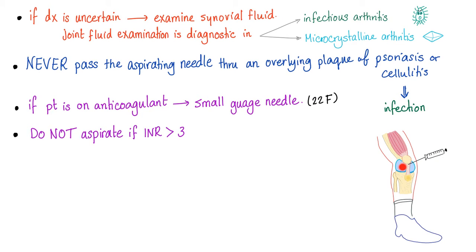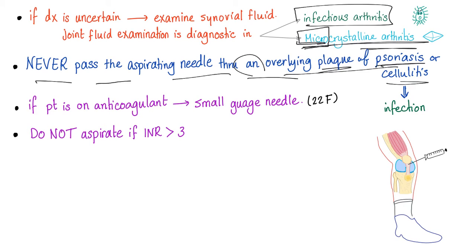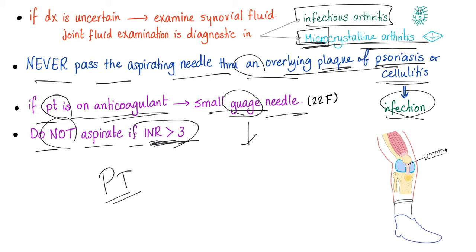If the diagnosis is uncertain, examine the synovial joint. Poke that joint and tap it. Get the fluid, send it to the lab. Joint fluid examination is diagnostic in cases of infectious arthritis and microcrystalline arthritis. We say microcrystalline, don't expect to see like a four-carat diamond ring inside the patient's big toe. Never pass the aspiring needle through an underlying plaque of psoriasis or cellulitis. You can transmit infection. If the patient is on anticoagulants, use a small gauge needle to decrease the risk of bleeding. Do not aspirate if the INR, which is part of the prothrombin time, is higher than 3 because there is a higher risk of bleeding. We're trying to diagnose the disease, not kill the patient.